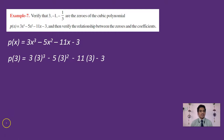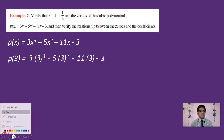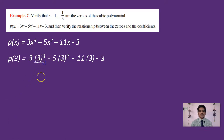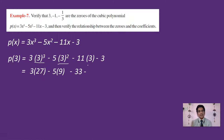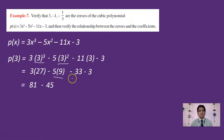Now simplifying: 3³ is 27, so 3×27 = 81. Then 3² = 9, so -5×9 = -45. Then -11×3 = -33, and the constant is -3. So we have 81 - 45 - 33 - 3. That gives 81 - 45 = 36, and 36 - 33 - 3 = 36 - 36 = 0.